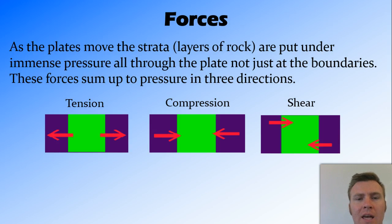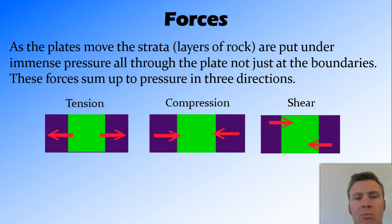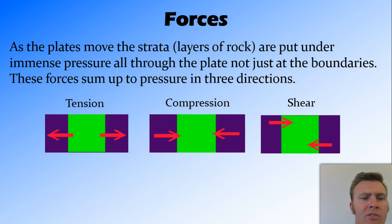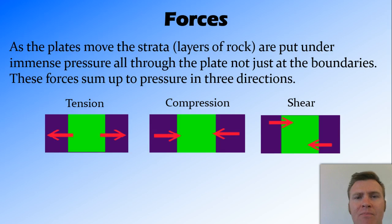What we're looking at is how the strata — the different layers of rock — move once they're put under this pressure. The force can happen in three directions: the first one being tension, where it's being pulled apart; compression, where it's being forced together; and shear, where it's being pushed in two directions to cause a split down the center.